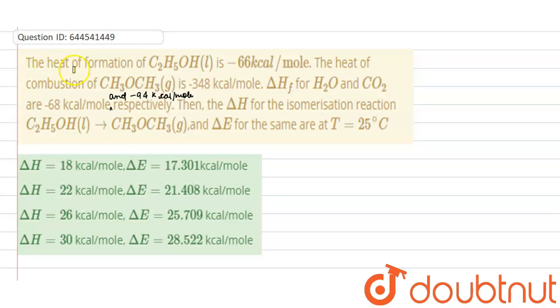Hello everyone, here our question is the heat of formation of C2H5OH liquid is given as minus 66 kilocalorie per mole, and the heat of combustion of ether CH3OCH3 is given as minus 348 kilocalorie per mole. And heat of formation of H2O and CO2 is given as minus 68 kilocalorie per mole and minus 94 kilocalorie per mole respectively.